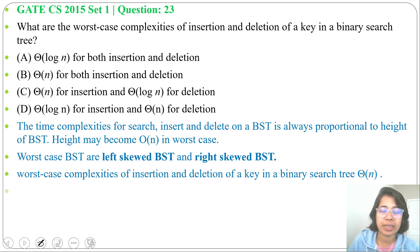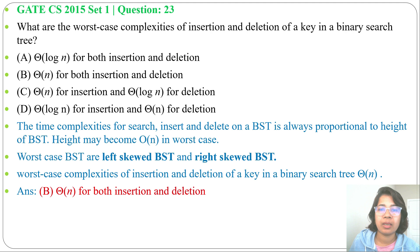Theta of n for both insertion and deletion. In case of binary search tree, height is not balanced, that's why in worst case it's theta of n.